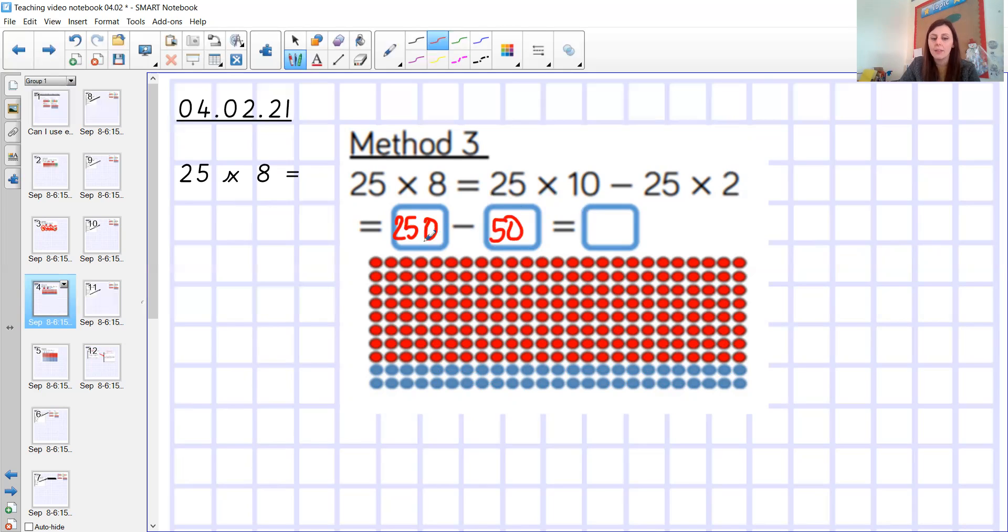And then you can do 250, take away 50, which gives you 200. And if you wanted to, because you wanted to check, you could add up all of the little counters here and you would see that that's 200 and that's 50. So you've got two lines of 25 there and you've got your eight lines of 25 there. So another really good method if it is like, for example, your 25 times 8 and you think, oh, that might be a little bit tricky. So I'm going to round it up to 10. So it is a good method, depending on what multiplication you're trying to work out.